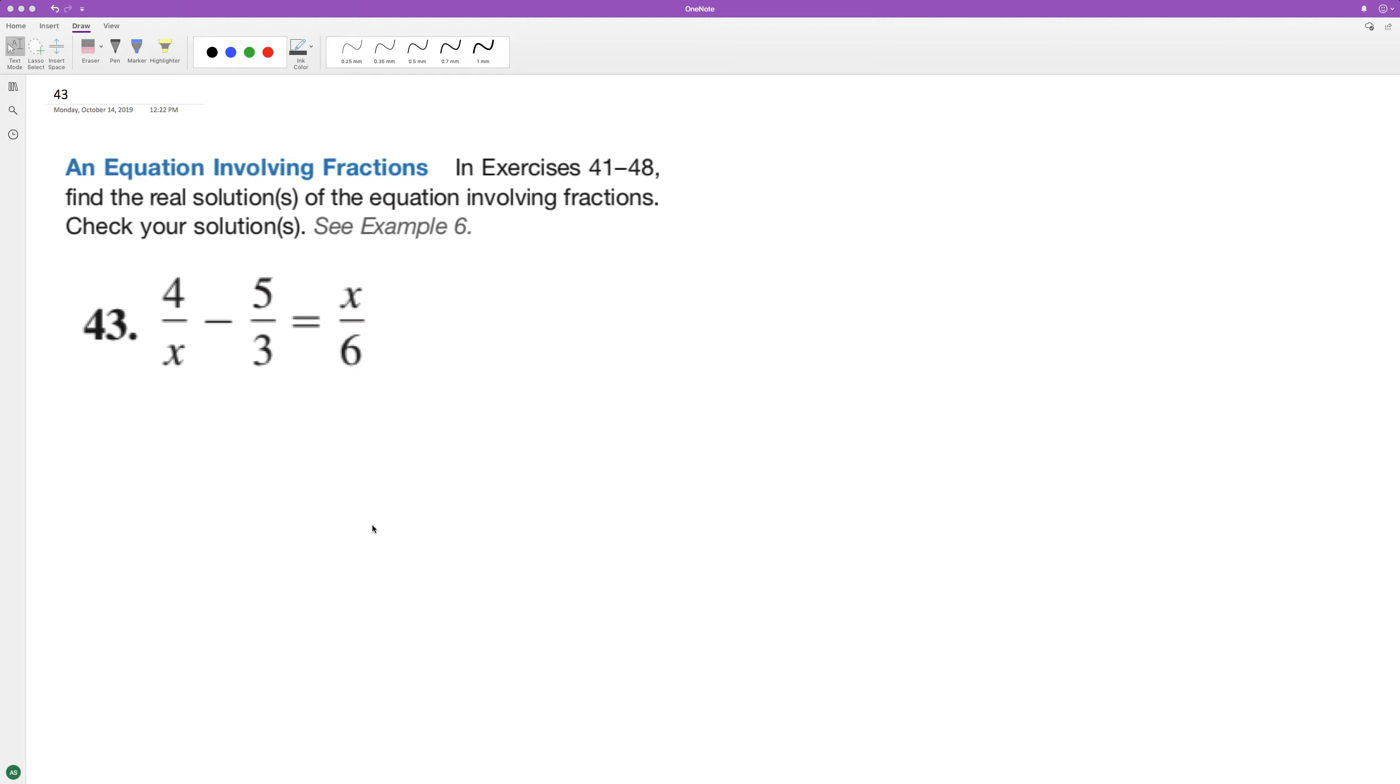So it looks like our common denominator in this instance is going to be 6x. Multiplying 6x across, we end up with 24 over 6x minus 10 over 6x is equal to x squared over 6x. Because they have the same common denominator we can just drop it.